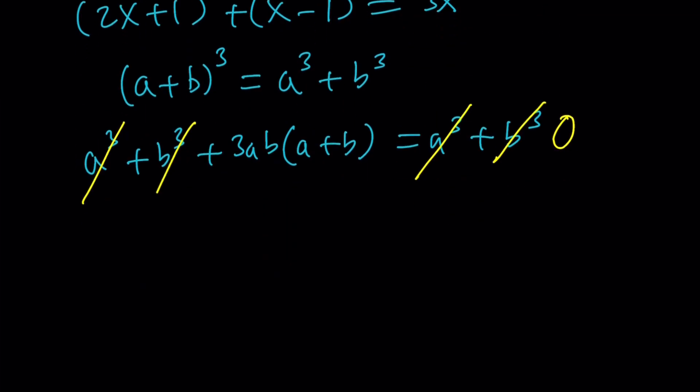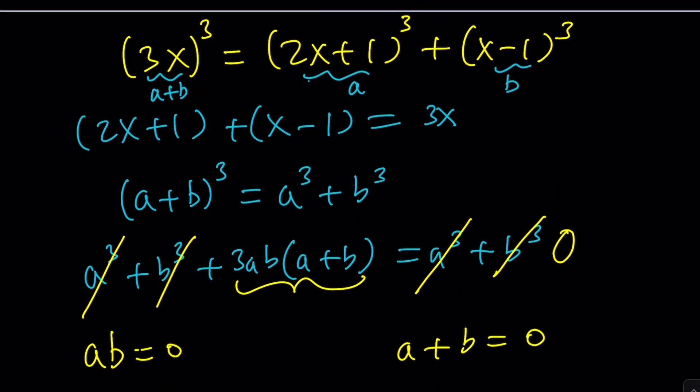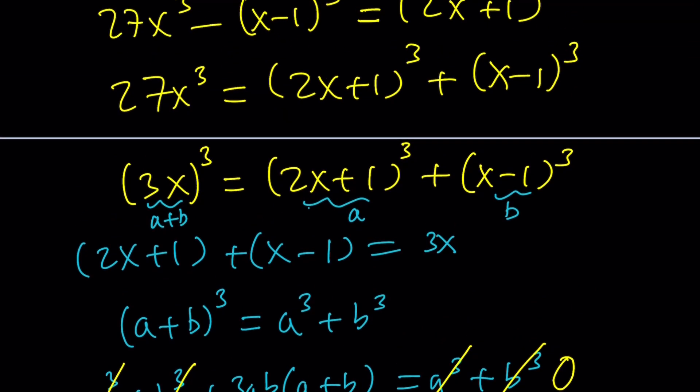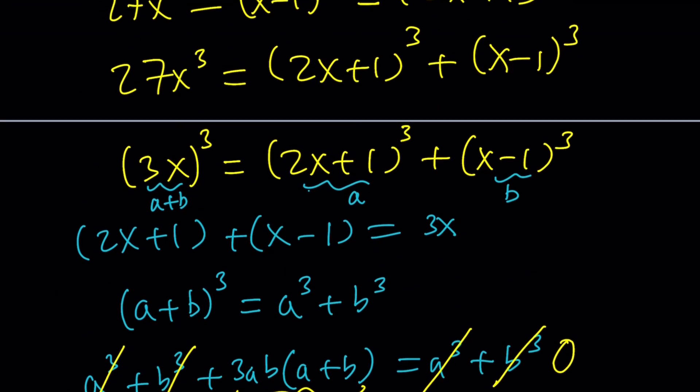And this is factored already. So from here, by setting this equal to 0, we get two things. Either ab is equal to 0 or a plus b is equal to 0. So let's see what a and b are. So a is linear, b is linear. Their product is going to be the product of two linear factors. So (2x plus 1) times (x minus 1) equals 0 from here.